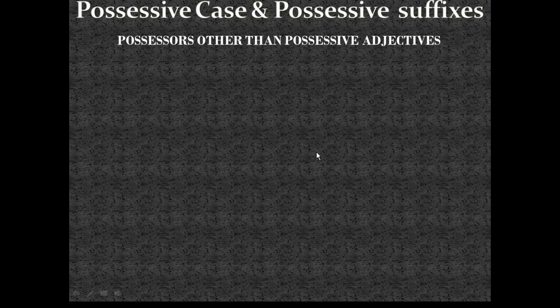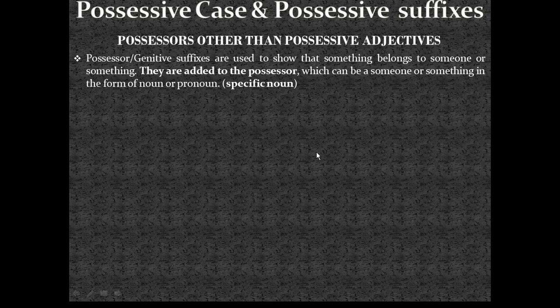Until now, we covered possessors as being possessive adjectives like 'my', 'your'. But what if the possessors become other than possessive adjectives? Now let's see: possessor suffixes are used to show that something belongs to someone or something. They are added to the possessor, which can be someone or something in the form of a noun or pronoun. This time the possessors will not be possessive adjectives, but other than possessive adjectives — like a noun or a pronoun.